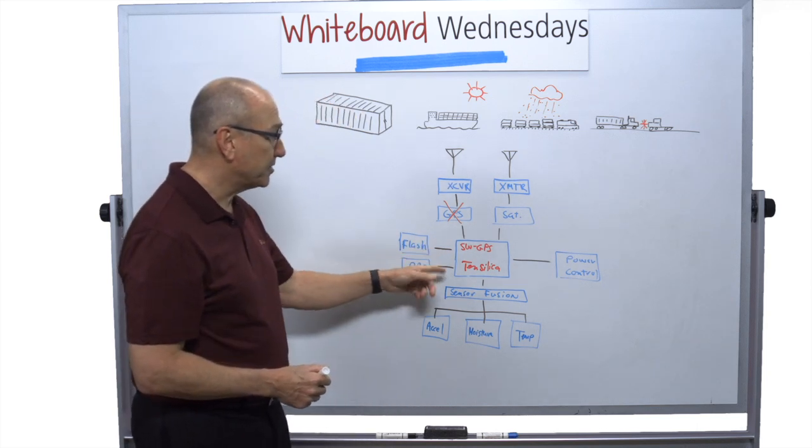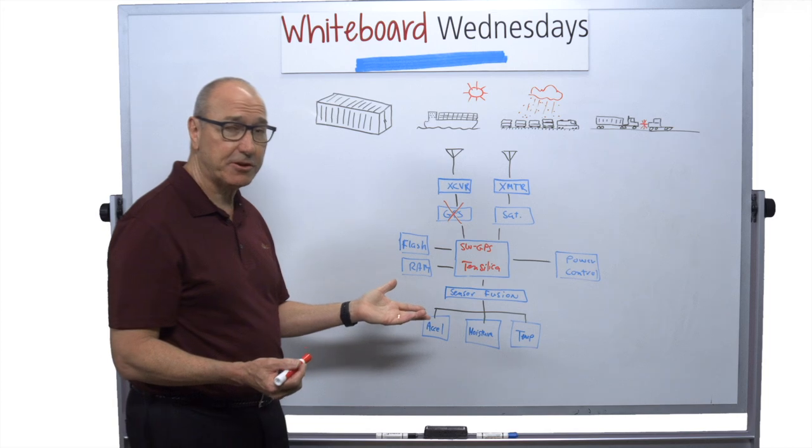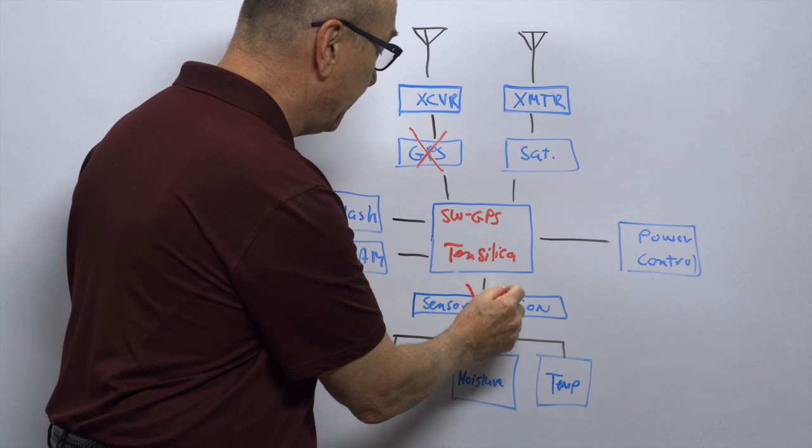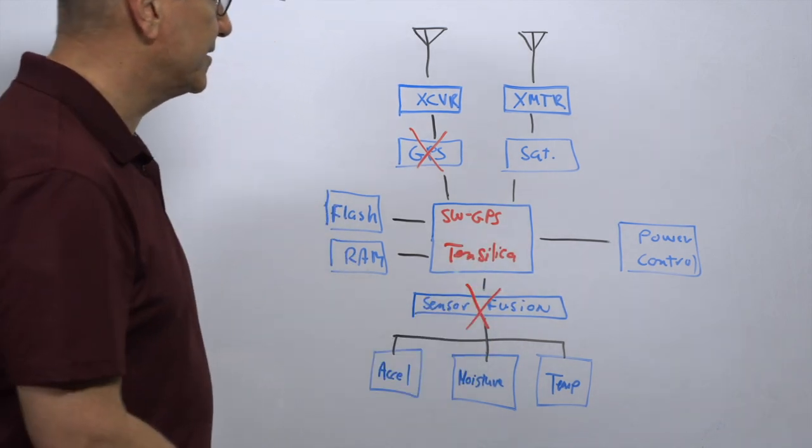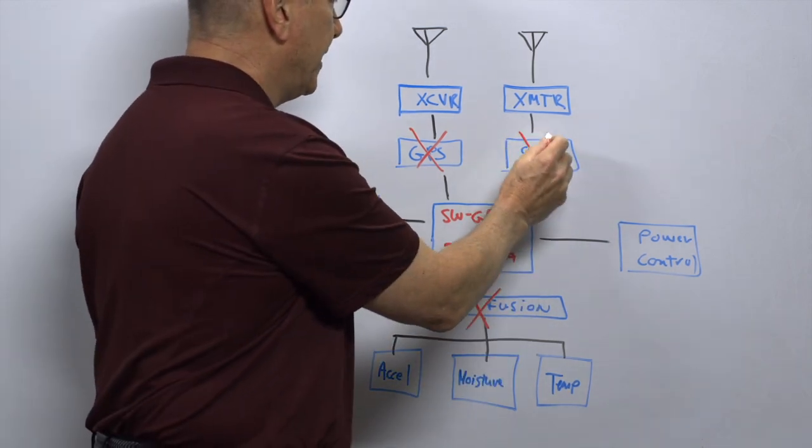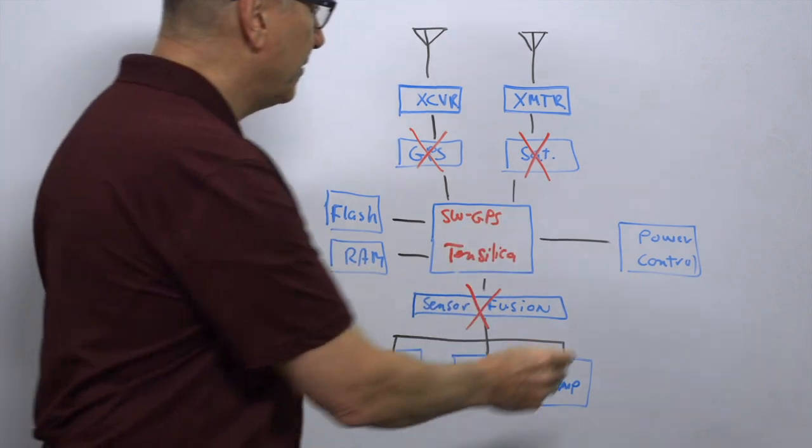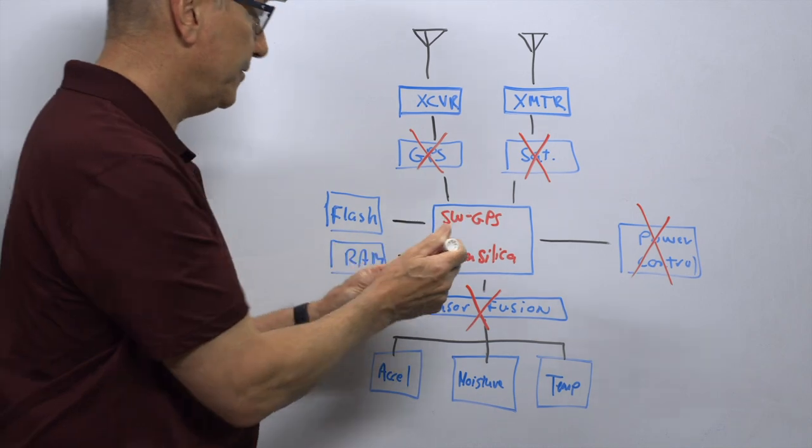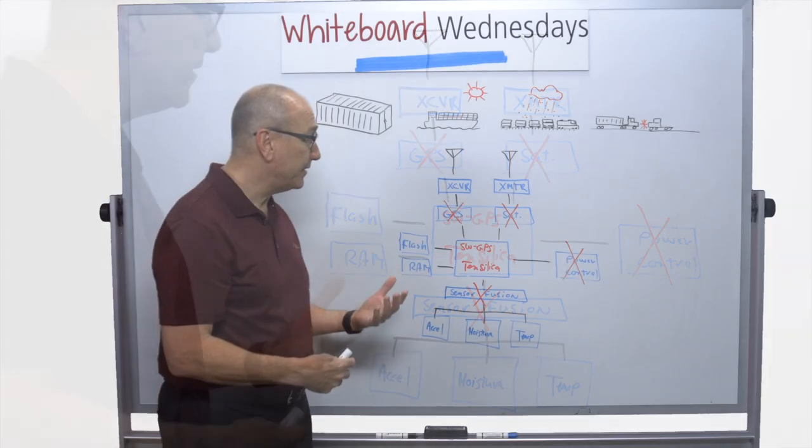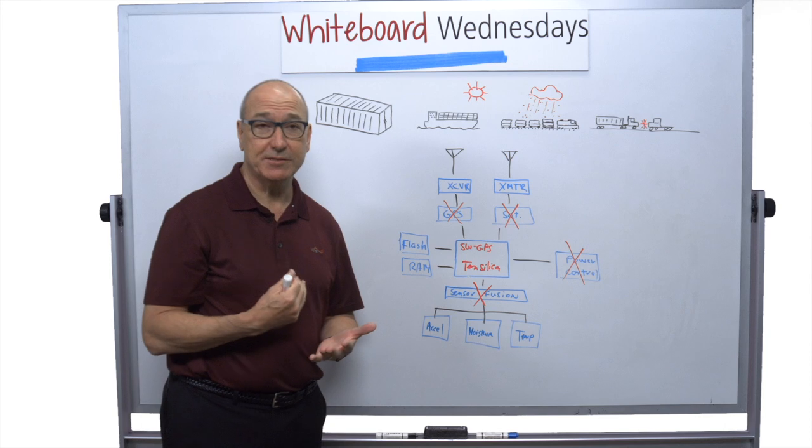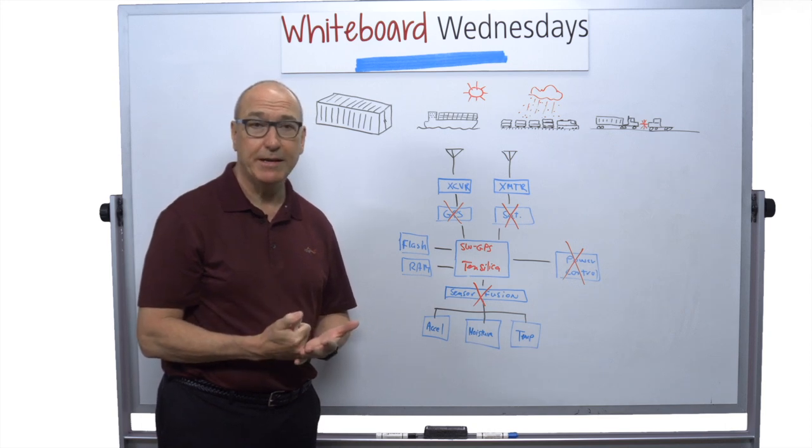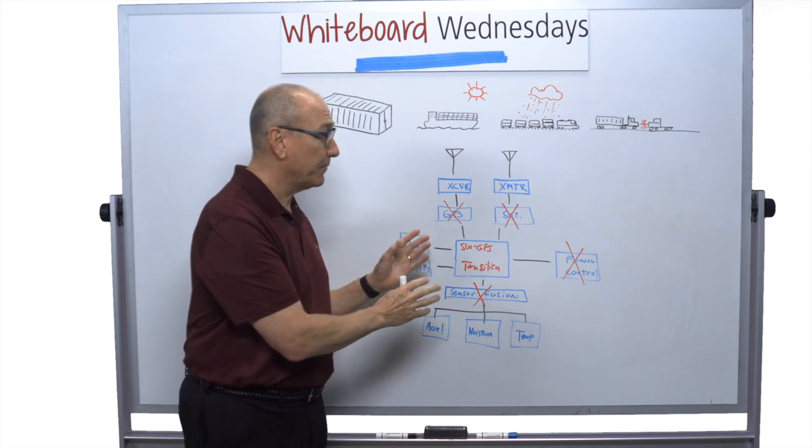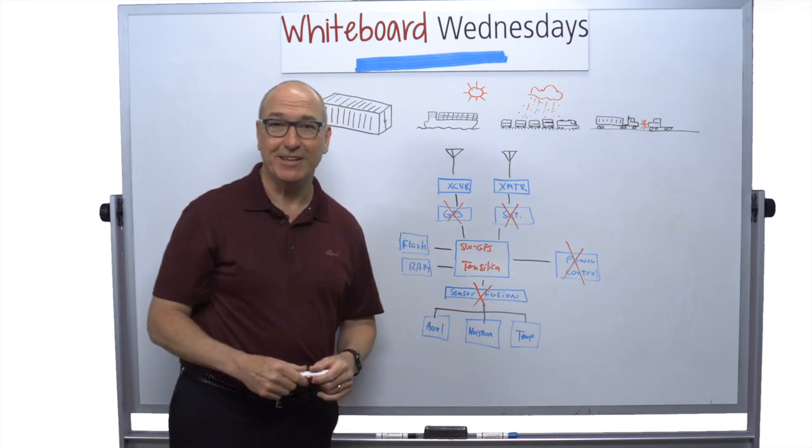Now while we're at it, there's some other things that Tensilica processors are routinely used for today. One of which is sensor fusion. So that can be moved into software that runs on the Tensilica. For baseband communication, the satellite interface could be moved in there. And for power control. So now we've taken a whole bunch of hardware and moved it into the Tensilica processor. And so that's how people can really produce good quality, optimize for low power, and optimize for low cost systems to serve the Internet of Things.